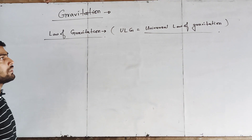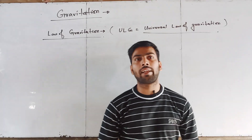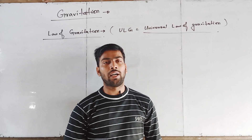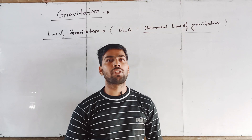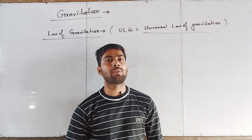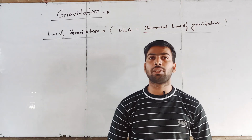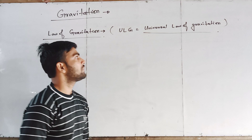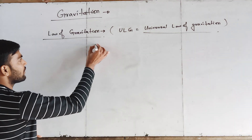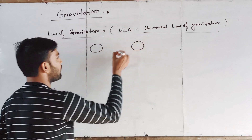According to this law, every body in the universe attracts every other body with a force called gravitational force, which is directly proportional to their masses and inversely proportional to the square of the distance between them. That is, we can say that two bodies are M1 and M2.